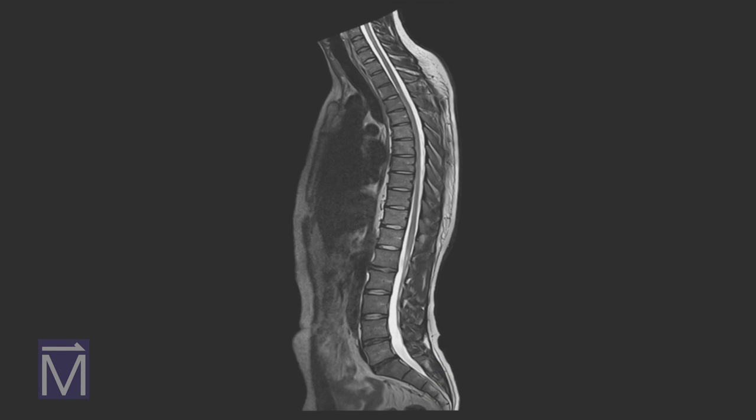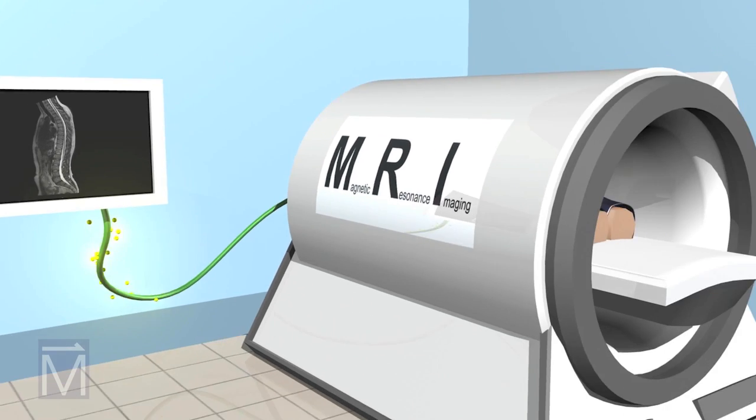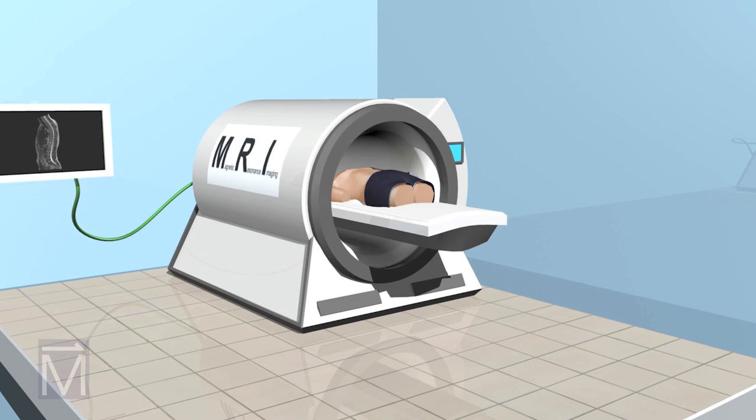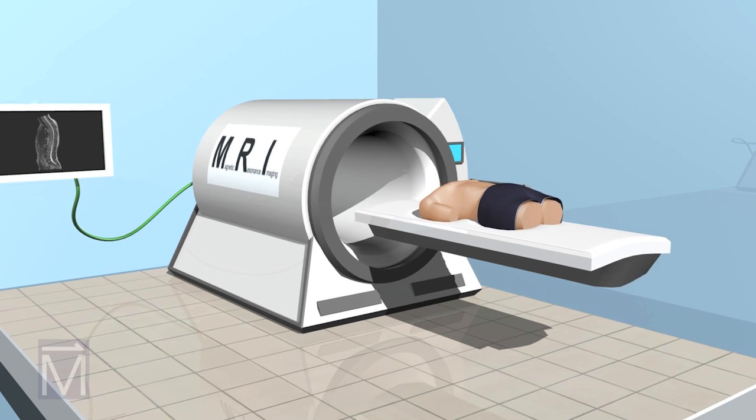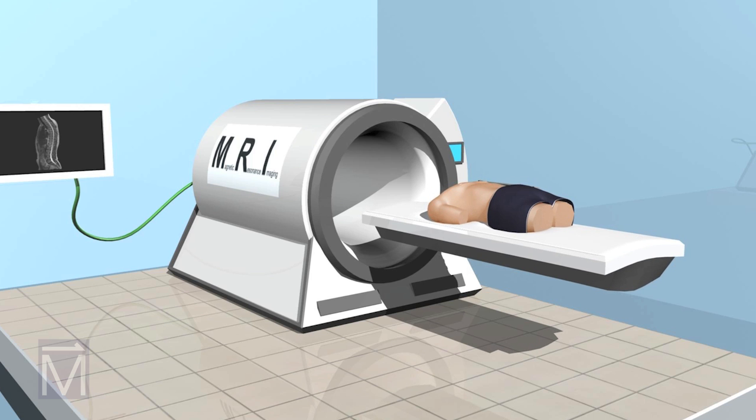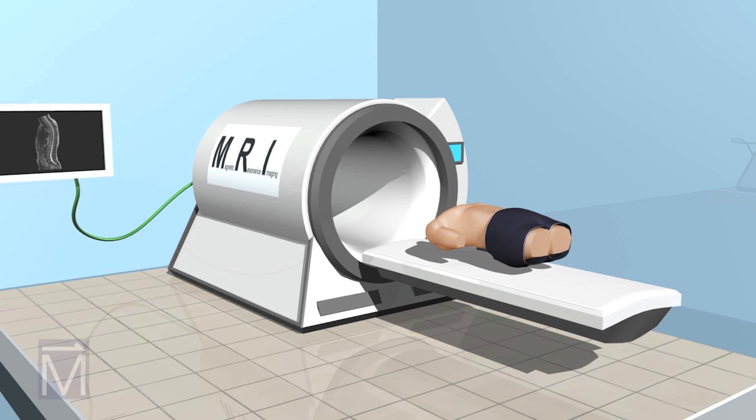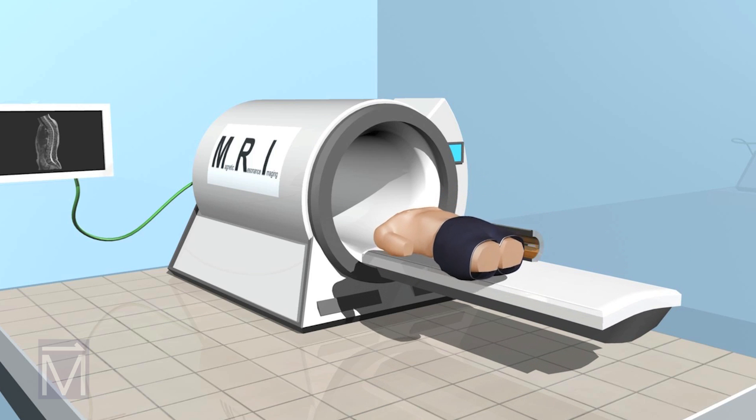Tissue with less water in it will have fewer hydrogen protons to emit signals back to the RF coils. Those areas appear darker on MRI scans. The varying signal strengths get translated into various shades of gray, which radiologists recognize as different types of tissue on the scan.